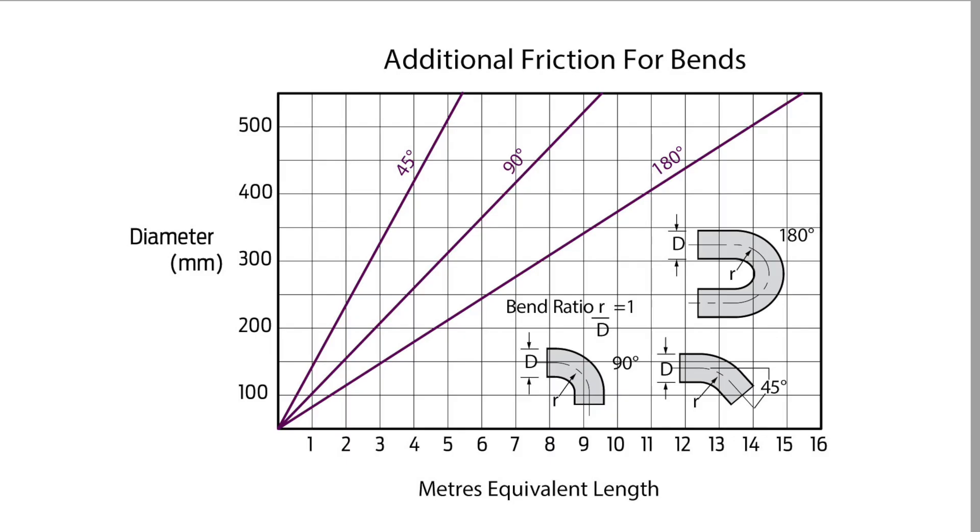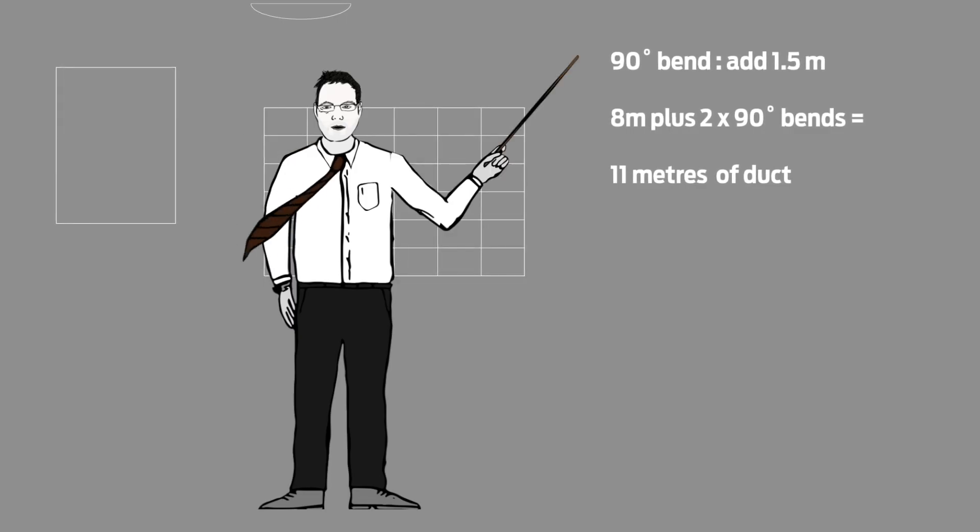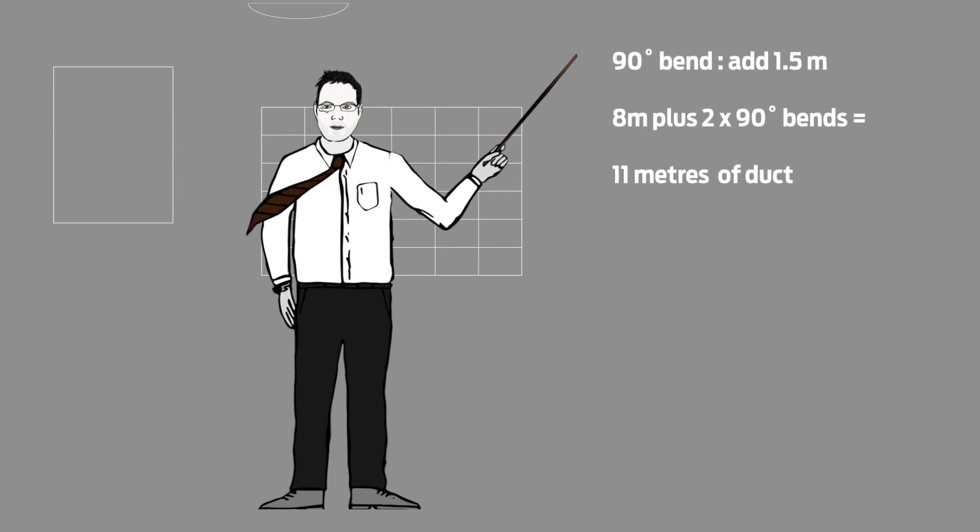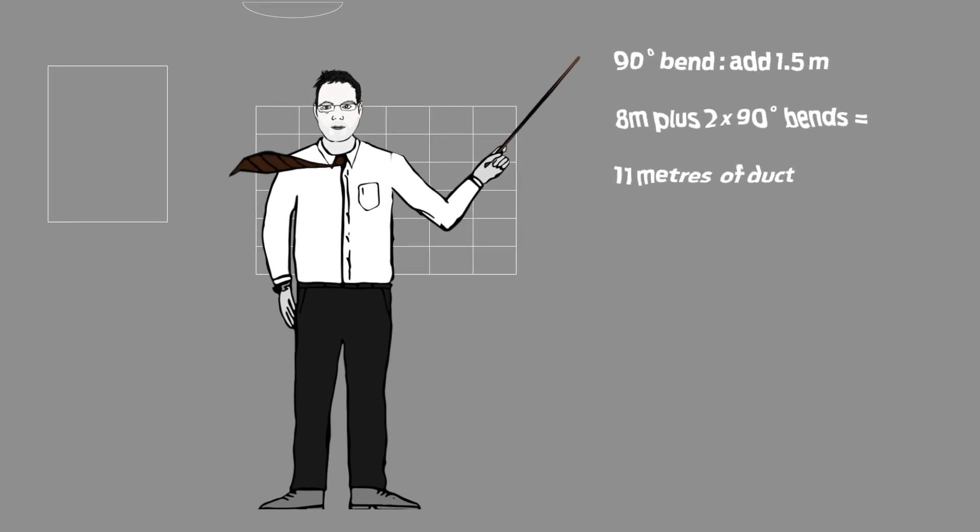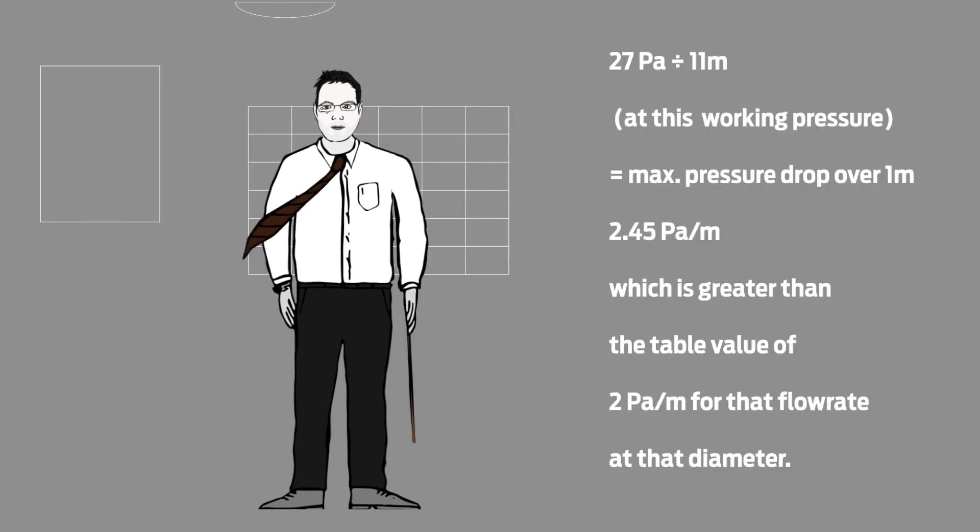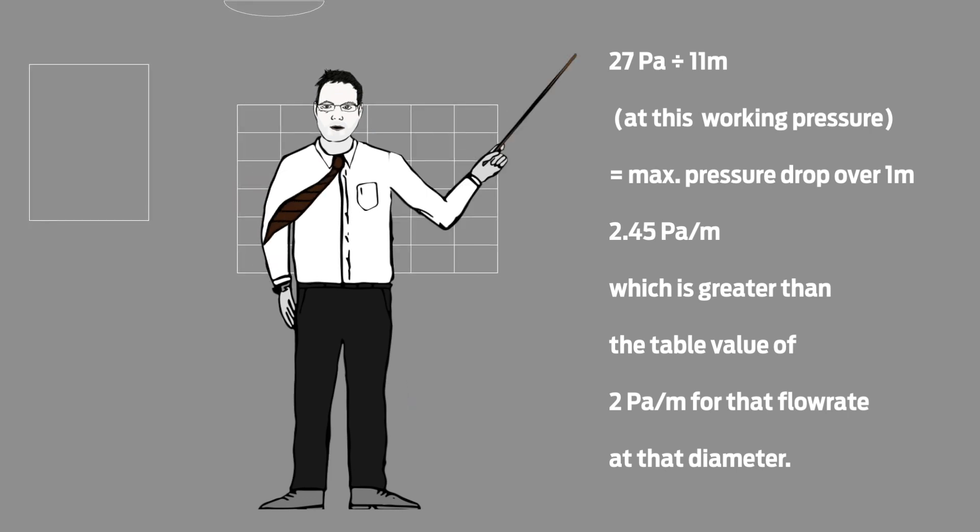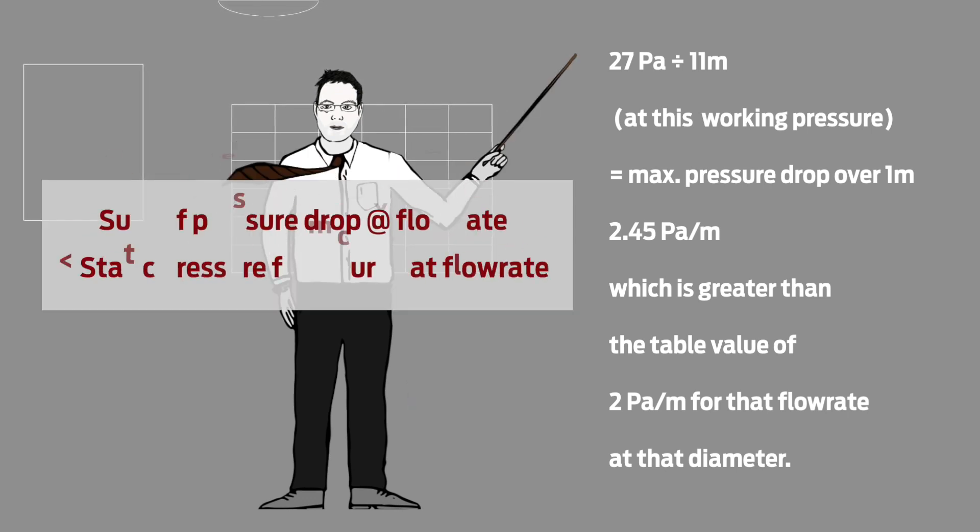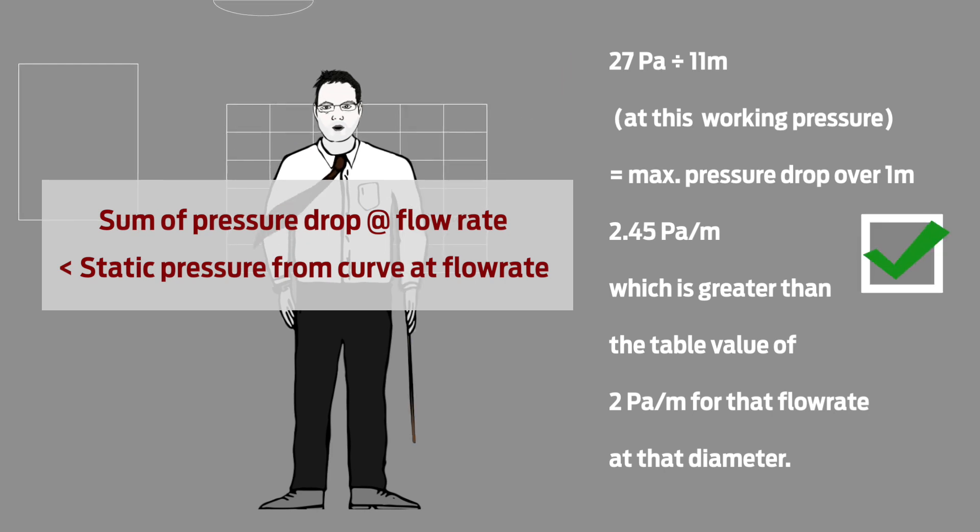So what about bends? For 125mm duct, a 90 degree bend adds around 1.5 metres in effective length. So in this example, we would have to redo the sums for 11 metres of duct, accounting for 2 90 degree bends. So 27 over 11 equals 2.45. This is still above the 2 Pa that we had per metre of duct work, so that should still work okay.